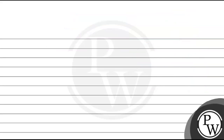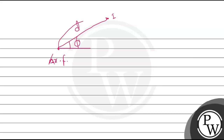Let us first understand what is given in the question. This is the archer fish, and this is the insect. The distance between them is d and the angle with the horizontal is phi. Now the archer fish wants to bring the insect down into the water, so it will squirt water in a parabolic path. In the question, we have been given that the insect is hit at the maximum height of the parabola.